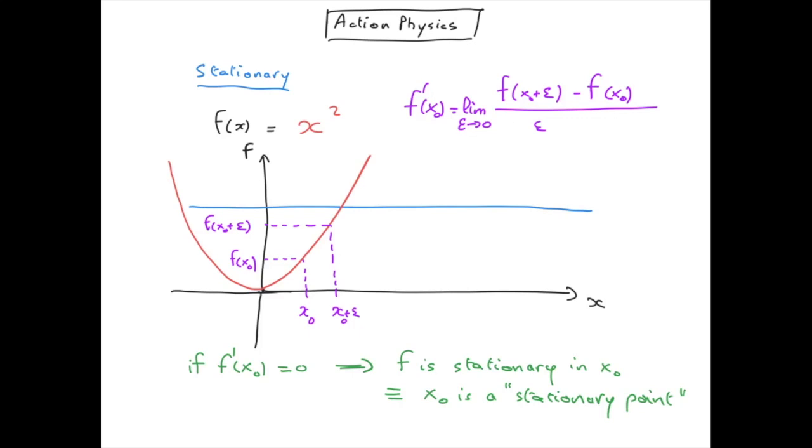Coming back to our parabola f equal x squared, its derivative f prime is equal to 2x and it is zero for x equal zero. So in this case, the stationary point is at x equal zero.